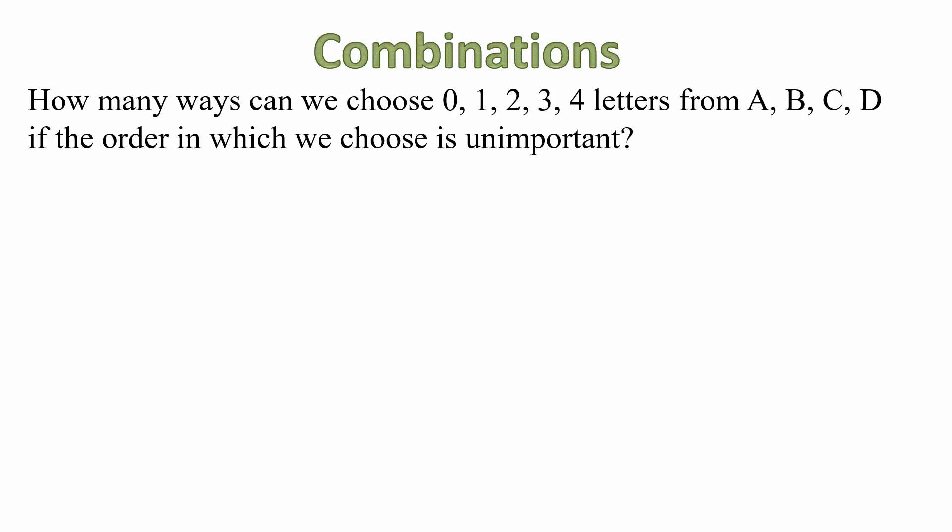That means choosing, let's say, A, B is the same as choosing B, A. Well, choosing 0 letters is easy, isn't it? There's only one way we can do that. To choose one letter, there are four ways we can do that. We can choose either A, B, C or D.